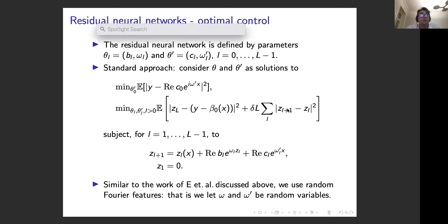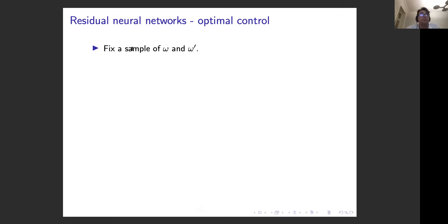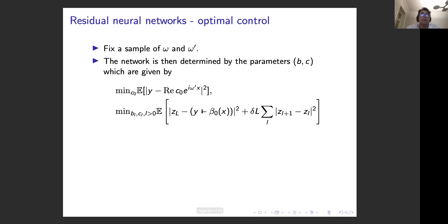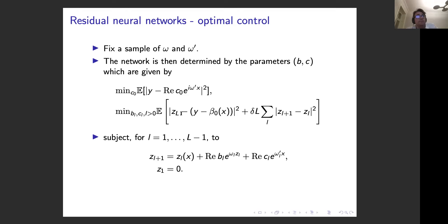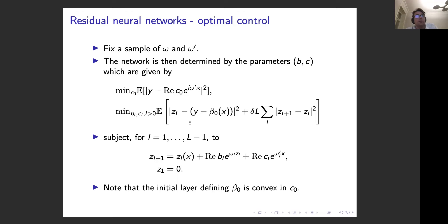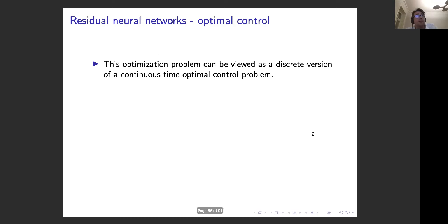Similar to E and co-workers, we use a random Fourier features approach: the frequencies ω and ω' are random variables, while the amplitudes b and c remain as parameters to optimize. If we fix the sample of ω and ω', the network is determined by b and c, and the resulting optimization problem is convex. We also formulate this as a continuous-time optimal control problem.